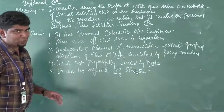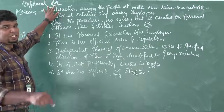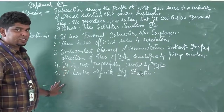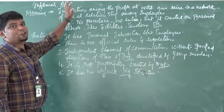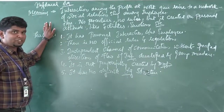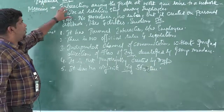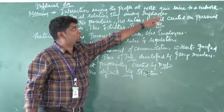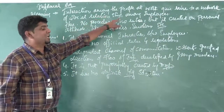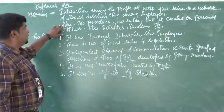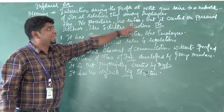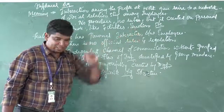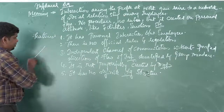Now we move to informal organization. Informal organization means interaction among the people at work gives rise to a network of social relationships among employees. There is no procedure, no rules, but it is created on personal attitudes, likes and dislikes, and emotions.